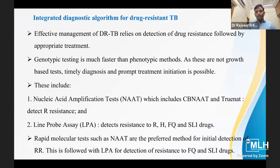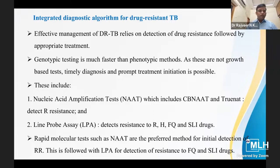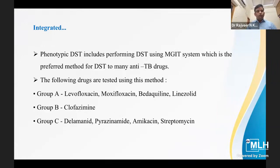Now the integrated diagnostic algorithm for drug-resistant tuberculosis. For effective management of DR-TB, detection of drug resistance followed by appropriate treatment is needed. Genotypic testing is much faster than phenotypic methods, enabling timely diagnosis and prompt treatment initiation. The genotypic methods used in the integrated diagnostic algorithm include NAAT tests — CBNAAT and TrueNAT — and the Line Probe Assay. Phenotypic DST uses the MGIT system for drugs including Group A: levofloxacin, moxifloxacin, bedaquiline and linezolid; Group B: clofazimine; Group C: delamanid, pyrazinamide, amikacin and streptomycin.